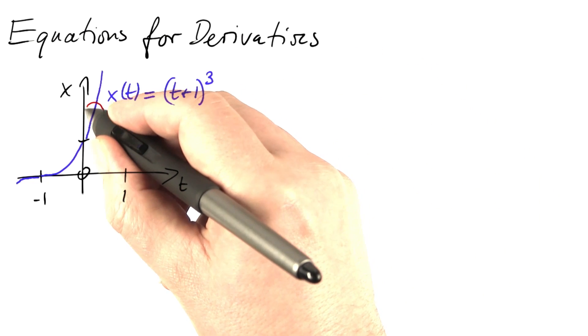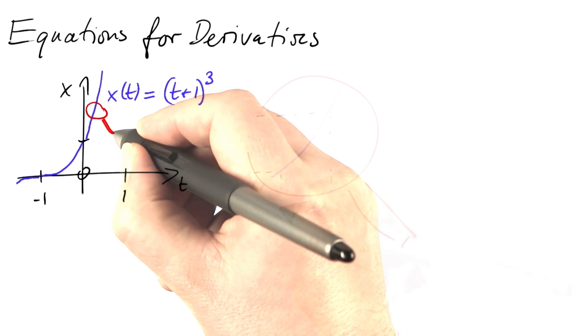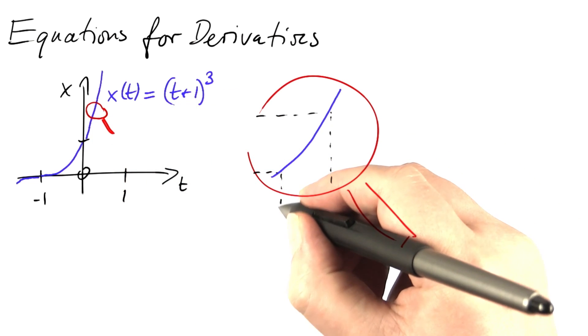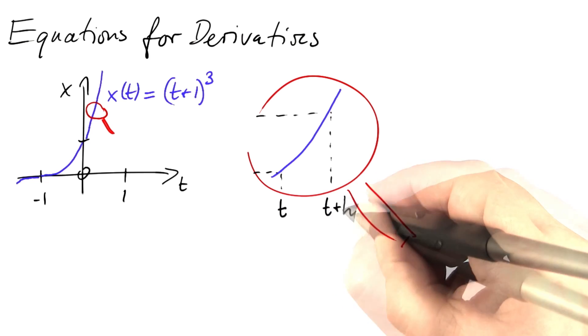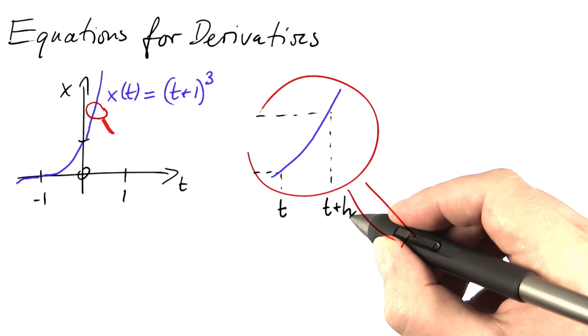Let's magnify a portion of that curve. Let's say this is some time t and this is a little later, t plus h. Throughout this course, h will denote a small increment of time.